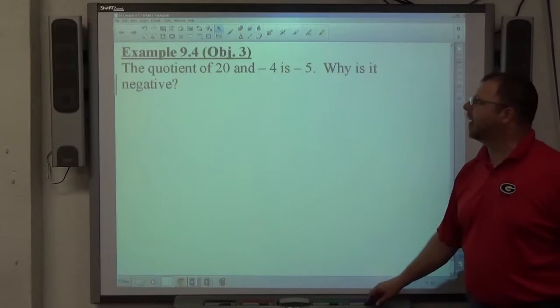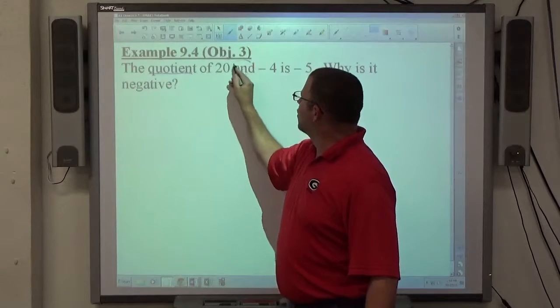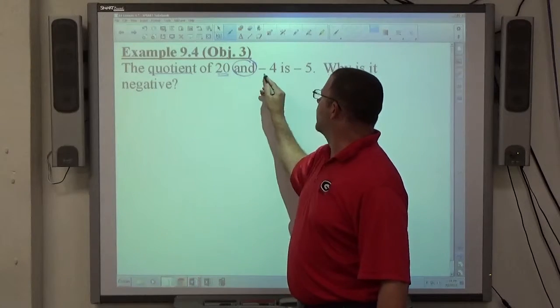Example 4: The quotient of 20 and negative 4 is negative 5. Quotient means to divide, and is where the division goes, so we're dividing 20 and negative 4.